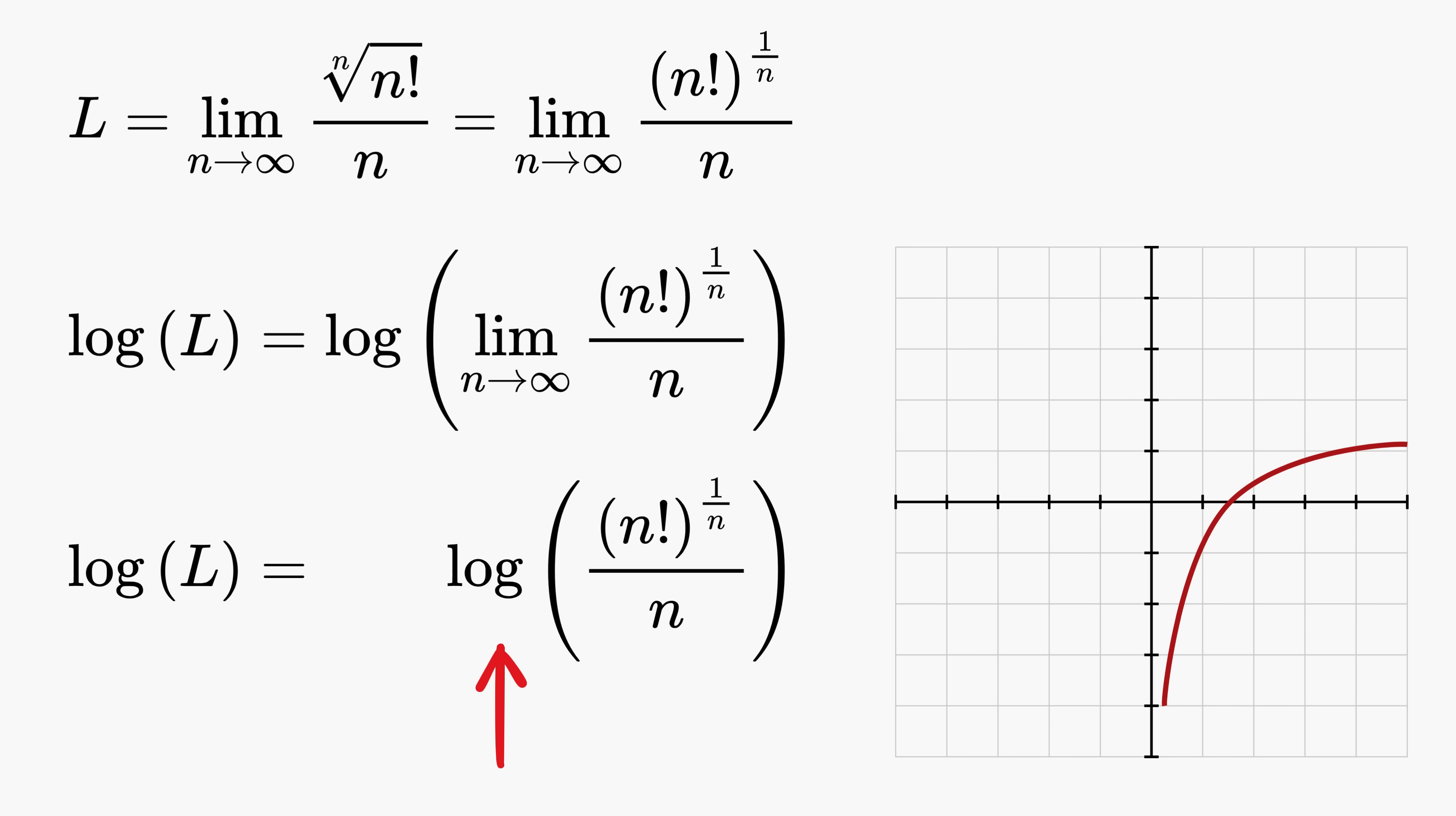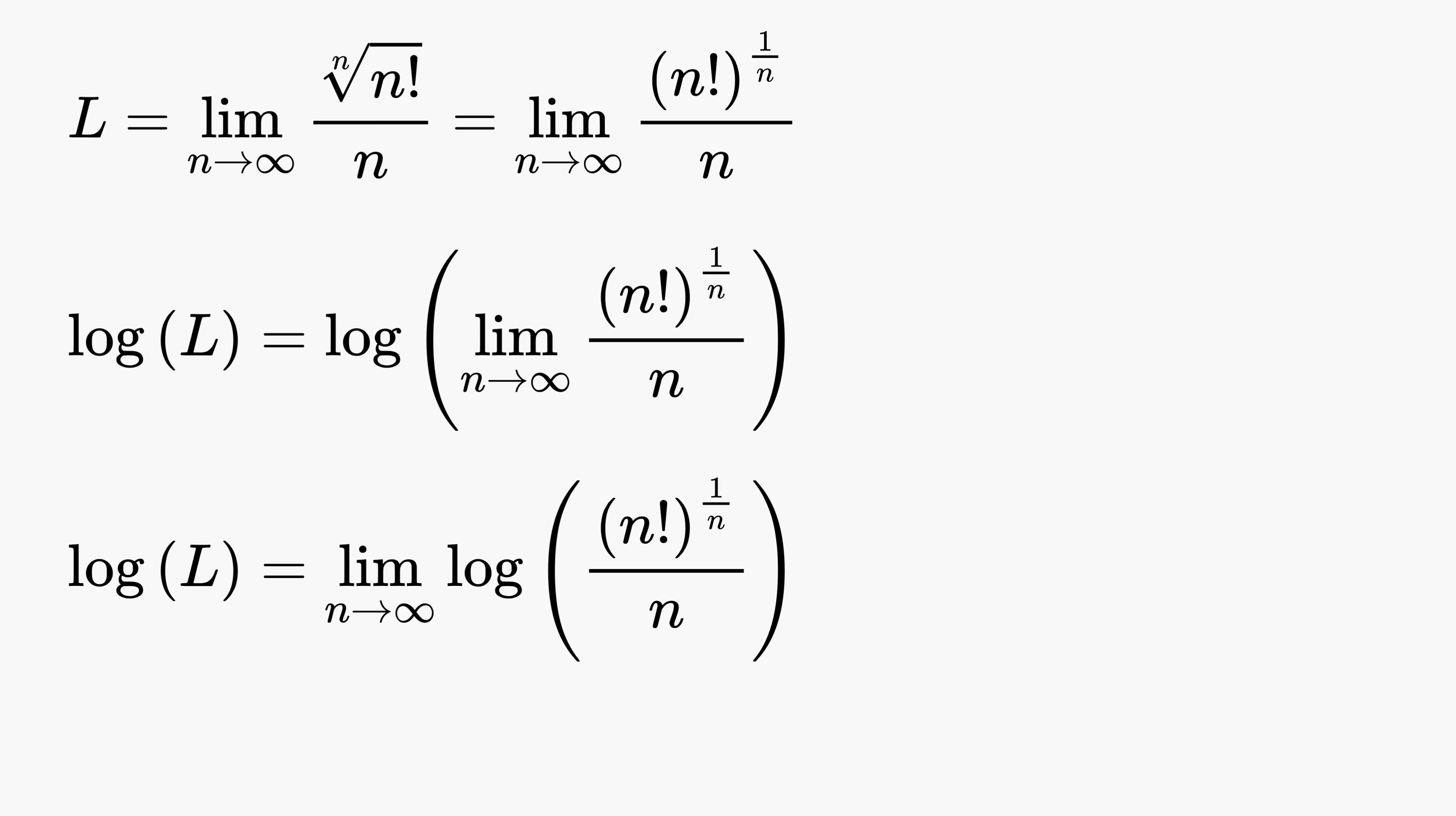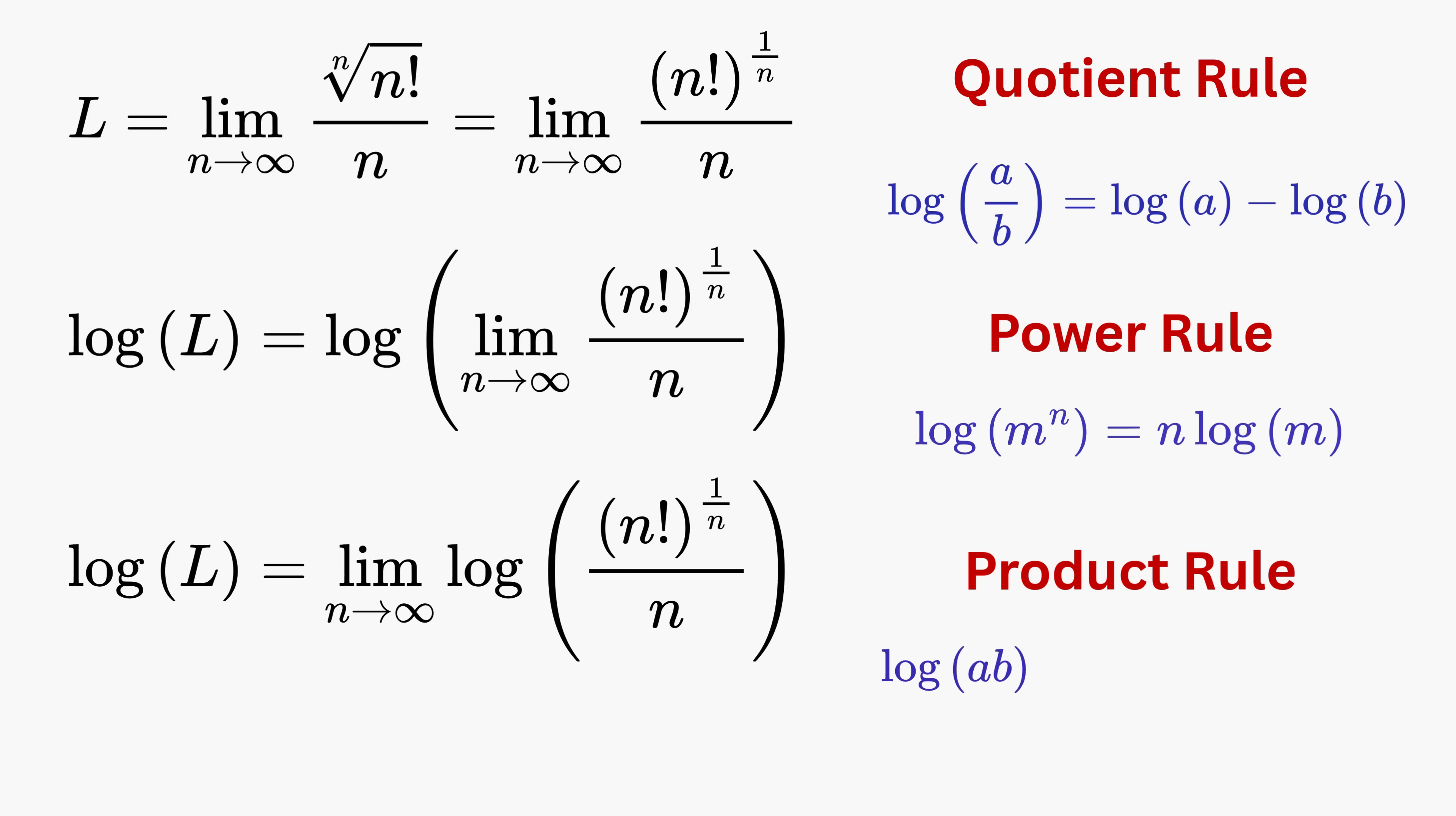Next we will use three very nice properties of logarithms. The first property, or the quotient rule, says that log(a/b) equals log(a) minus log(b). The second property, or the power rule, says that log(m^n) equals n times log(m). The third property, or the product rule, says that log(a times b) equals log(a) plus log(b).